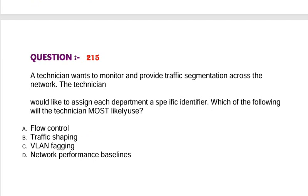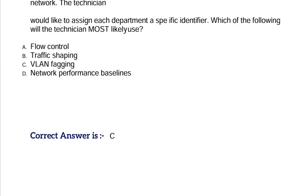Question: A technician wants to monitor and provide traffic segmentation across the network. The technician would like to assign each department a specific identifier. Which of the following will the technician most likely use? Option A, flow control. Option B, traffic shaping. Option C, VLAN tagging. Option D, network performance baselines. Correct answer is Option C.